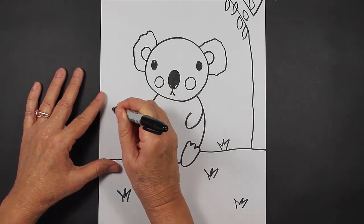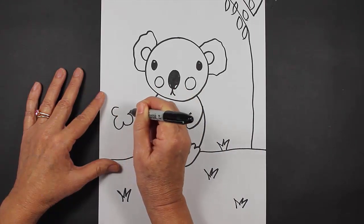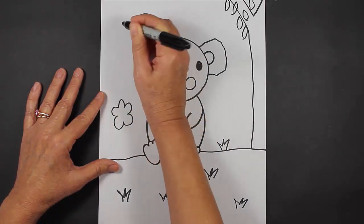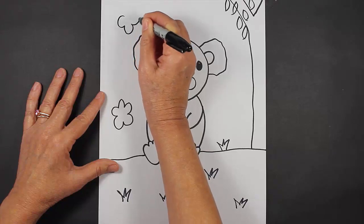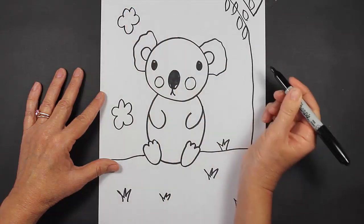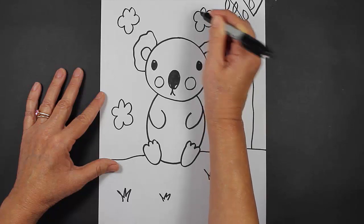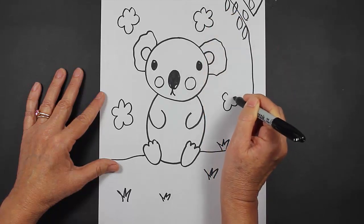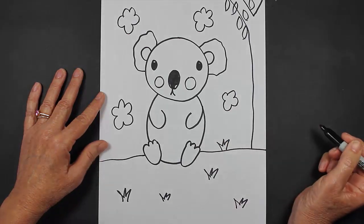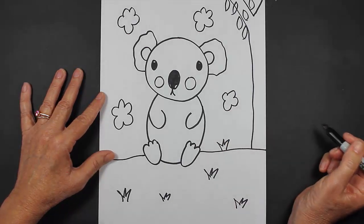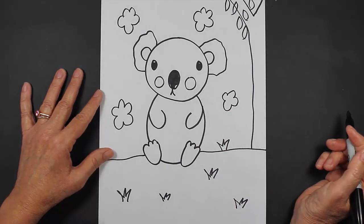All right, the next thing I'm going to do is make some clouds because it's a nice day out where the koala is spending some time on the grass. Maybe one here. And maybe another cloud here, a small one. There we go. I hope you enjoyed this lesson. I'll see you next time.